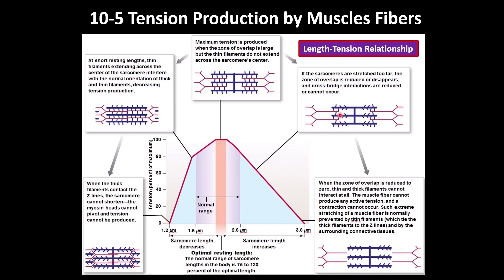When the muscle is at a longer-than-optimal length, only some myosin heads can attach to the thin filaments — others cannot. The thin filaments can move toward the midline but only partially, so tension is reduced. If the muscle is very stretched, there is no overlap between thick and thin filaments at all, so myosin heads cannot attach to actin and nothing happens — tension approaches zero if the muscle is stretched too much.